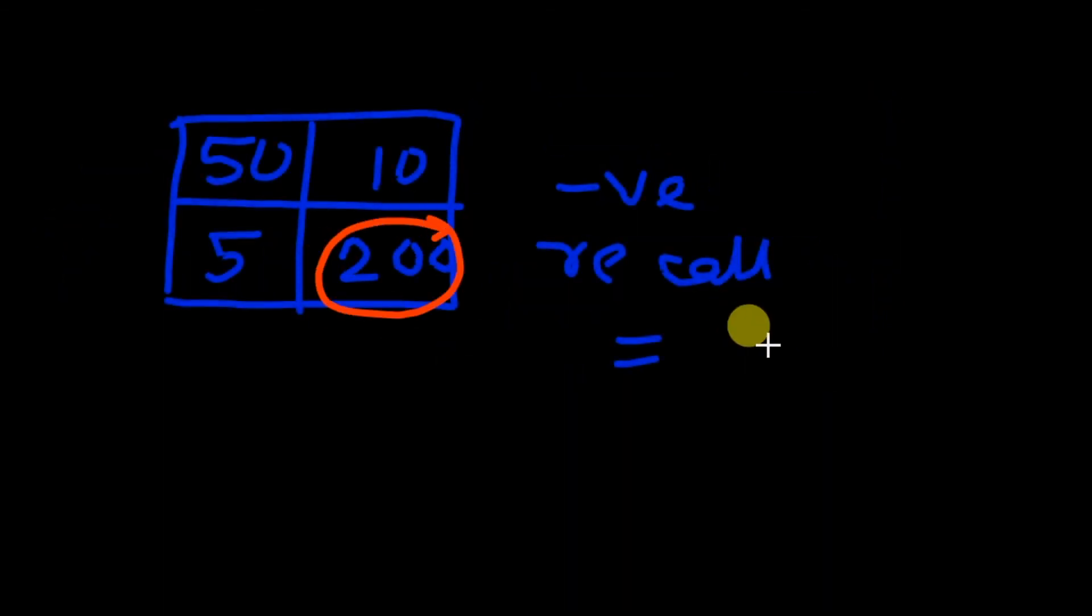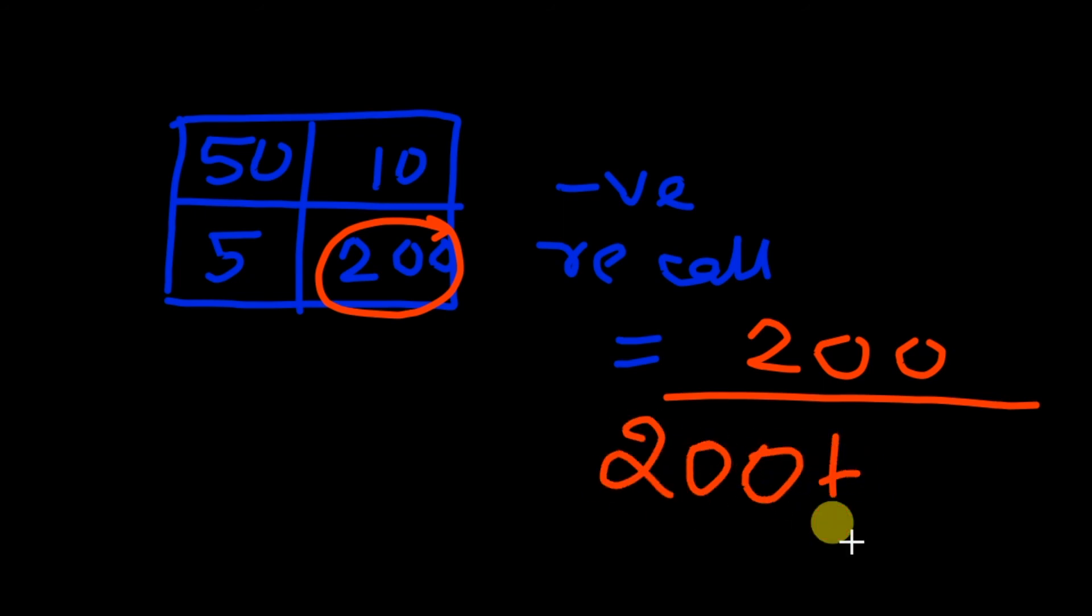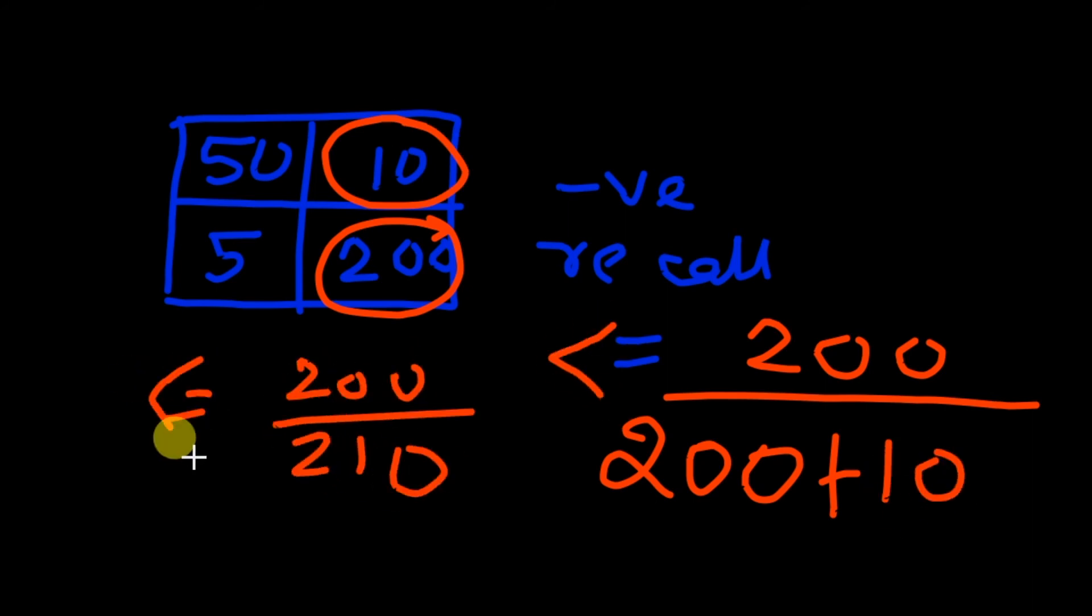Based on the formula, let's calculate specificity for our given confusion matrix, which is the ratio of true negative by true negative plus false positive. So in our case, true negative is 200, false positive is 10. So we have a ratio of 200 by 210, which approximates to 0.95.